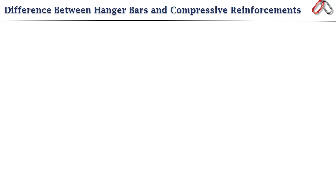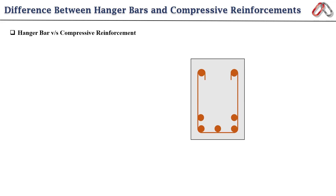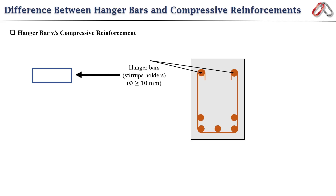An important point is the difference between hanger bars and compression reinforcement. Hanger bars are of nominal diameter provided in the compression zone to hold the shear stirrups, and are not generally considered as compression reinforcement. However, in some cases where the area of hanger bars is significantly greater than 0.2 percent of the gross area, the hanger bars are treated as compression reinforcement.